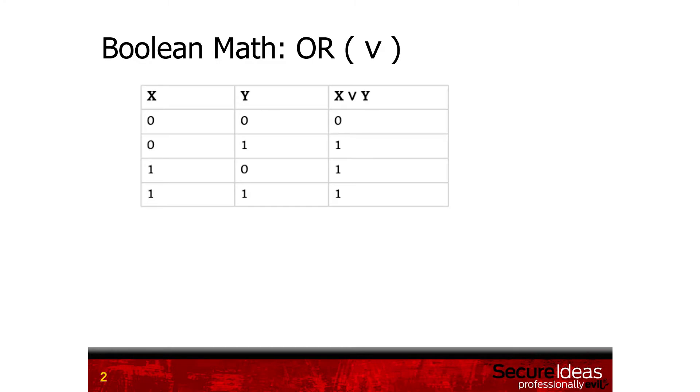Here we have a truth table. Because we're dealing with binary, it's very easy to map out the different combinations: 0 and 0, 0 and 1, 1 and 0, and 1 and 1.